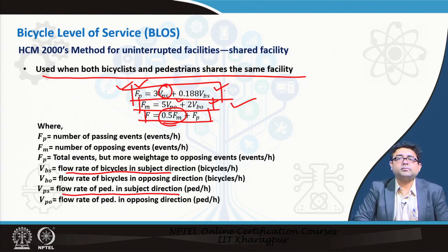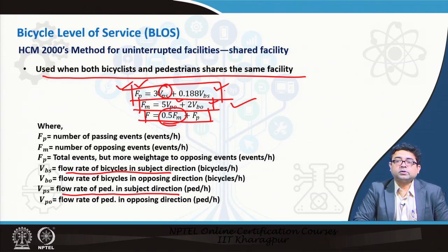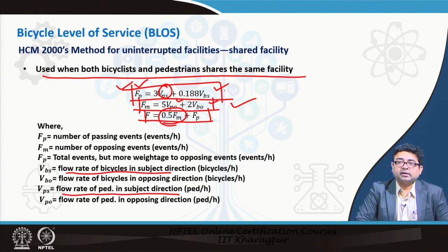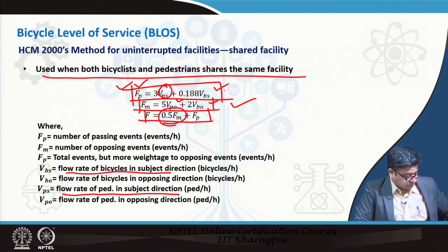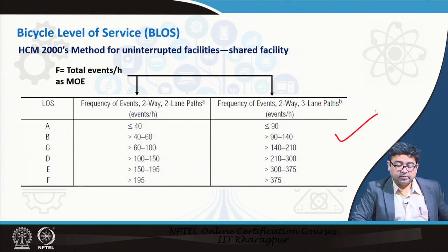The HCM 2000 was the first attempt at developing levels of service for bicycles, and the calculations were very simple. The concept of incorporating the number of events — passing events and opposing events — was first introduced in the HCM. Later iterations of the HCM have further improved these methods. IndoSCM has not yet incorporated bicycle level of service, but we hope to do so in future versions as more dedicated bicycle facilities are developed in India.